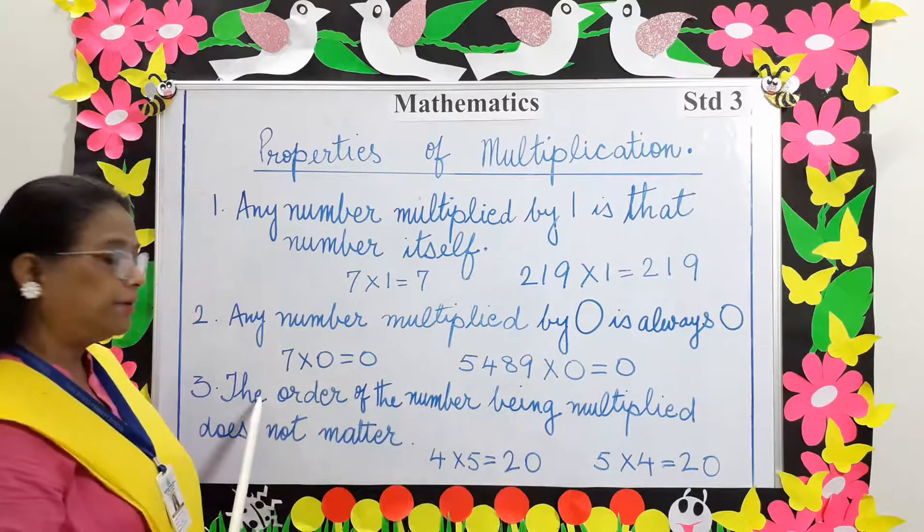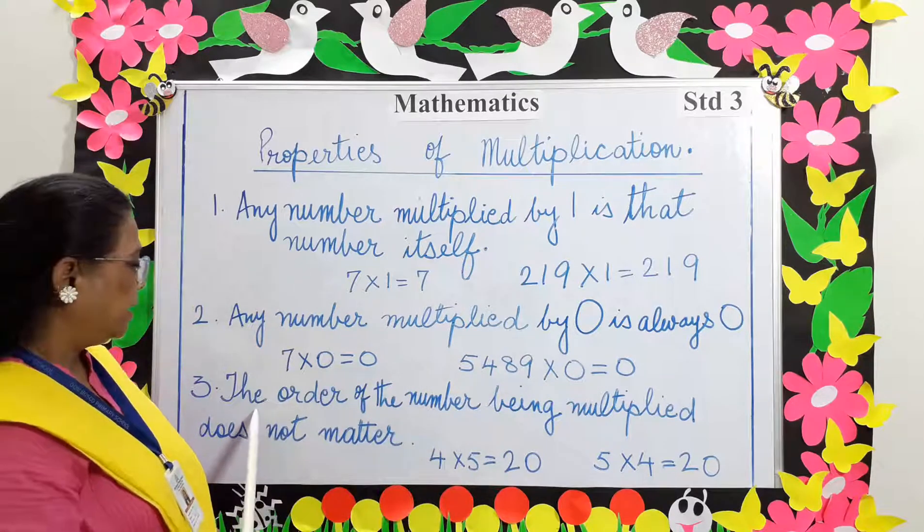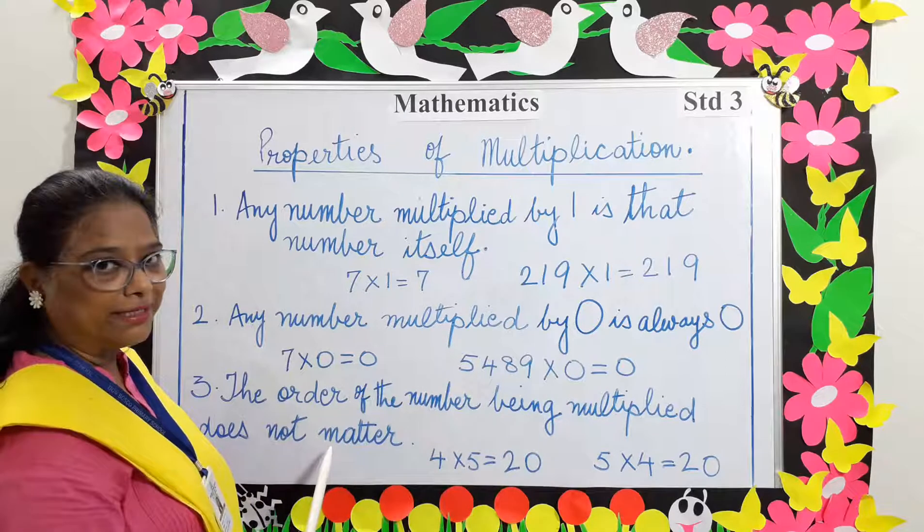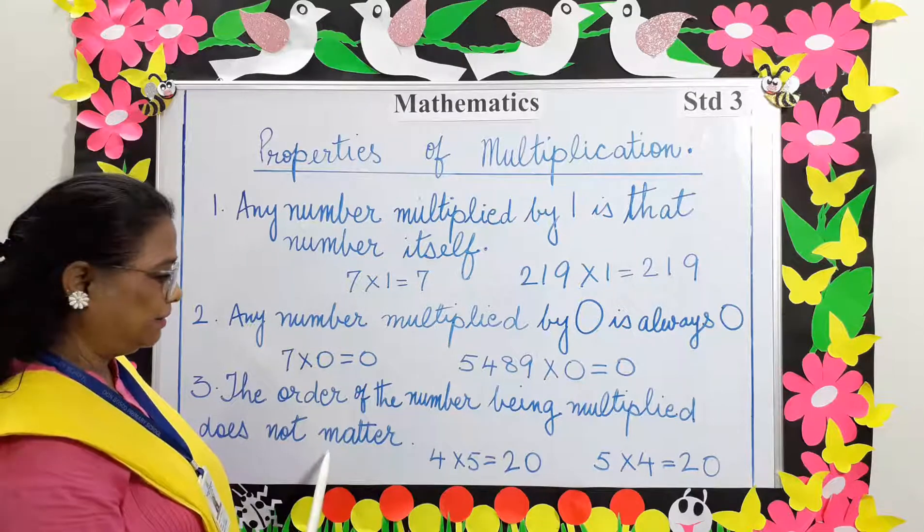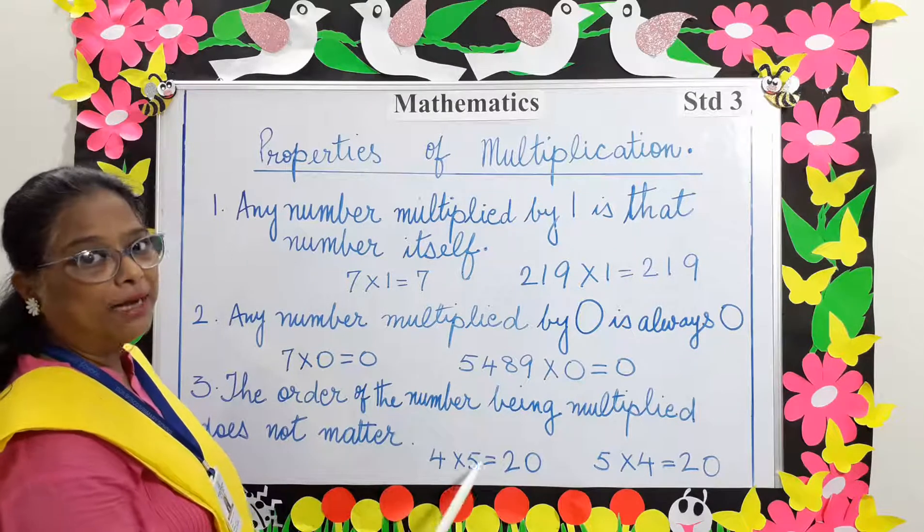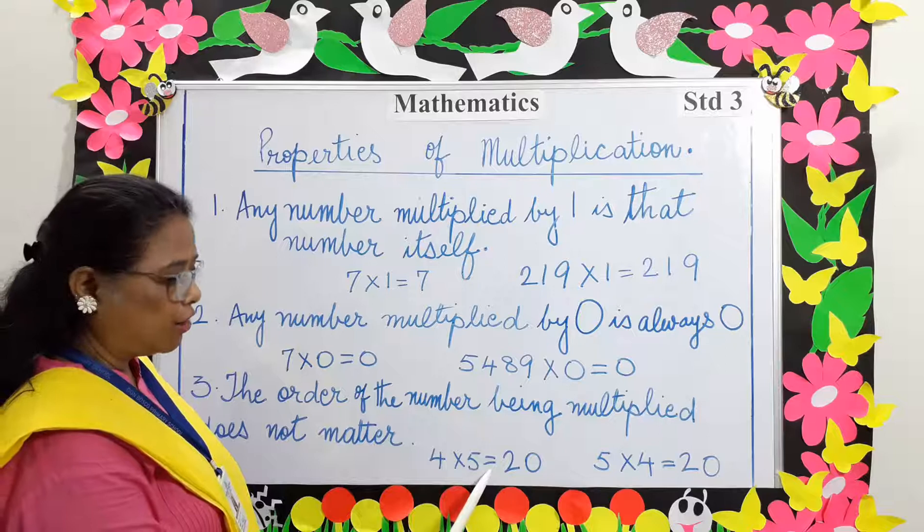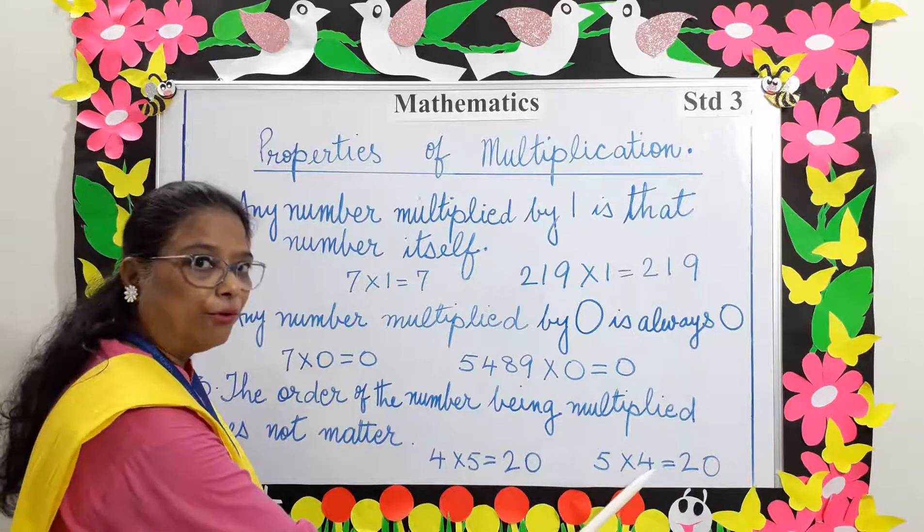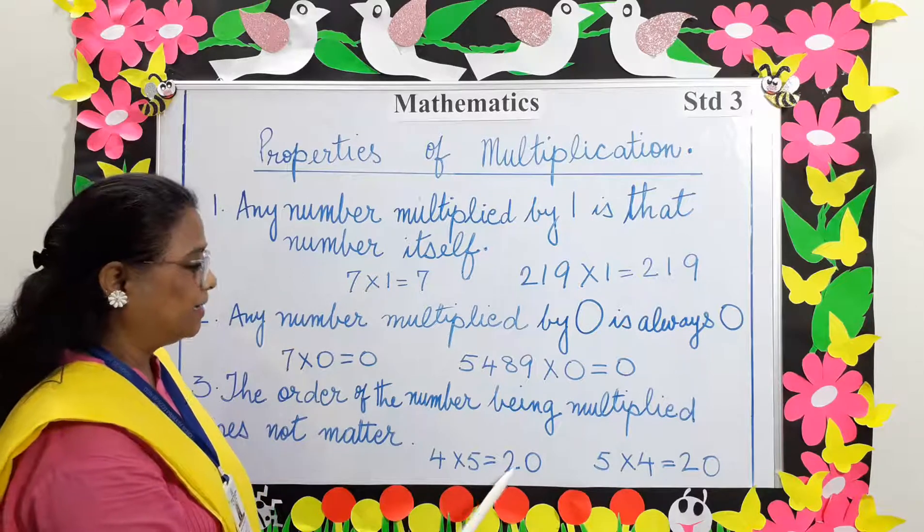Property number 3: The order of the number being multiplied does not matter. Example: 4 multiplied by 5 or 5 multiplied by 4, both the products are 20.